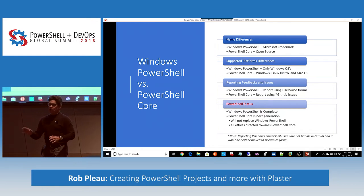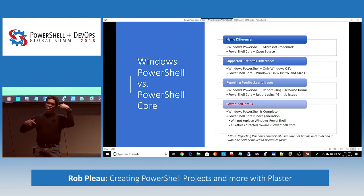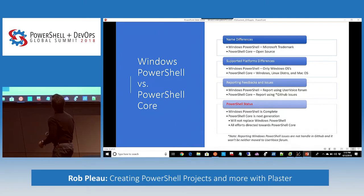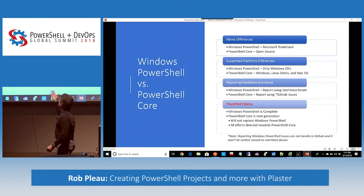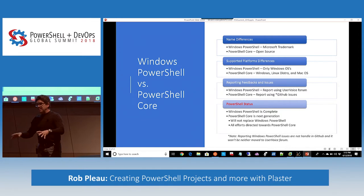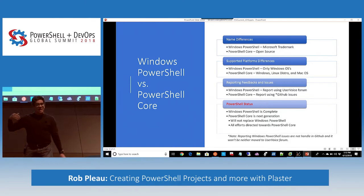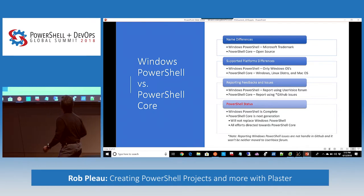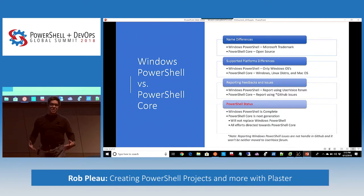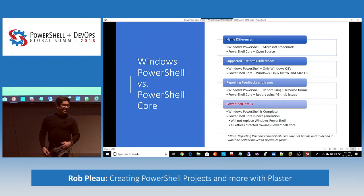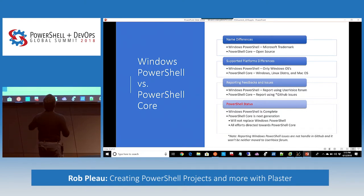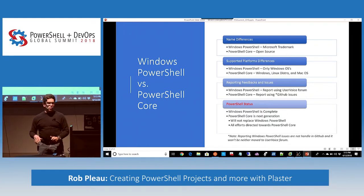The PowerShell Core GitHub landing page has a heading explaining where to submit Windows PowerShell versus PowerShell Core issues. Just as Jason mentioned, Windows PowerShell is complete — there may be some minor fixes but the version is frozen. PowerShell Core is the next generation — that's where all efforts from the open source PowerShell team are directed. It's not meant to replace Windows PowerShell; they're meant to be side by side. Maybe someday they'll rename it back to just PowerShell, but all improvement efforts are directed toward PowerShell Core.